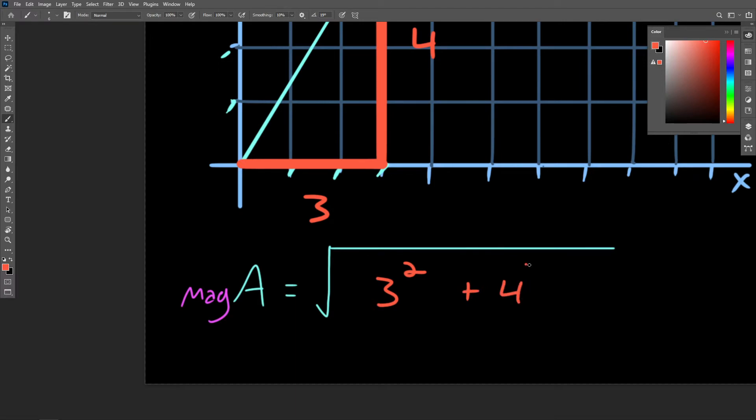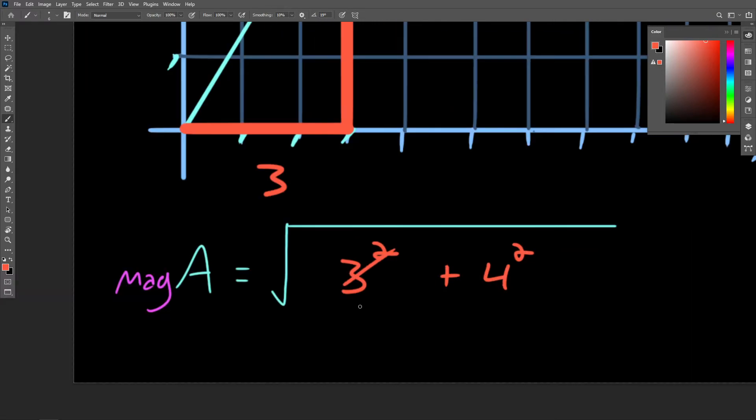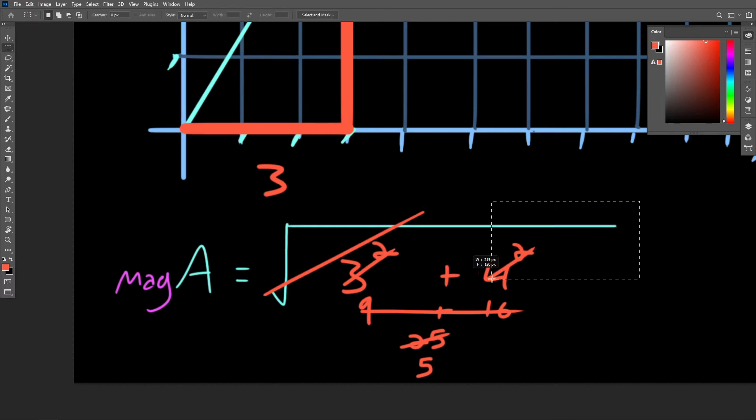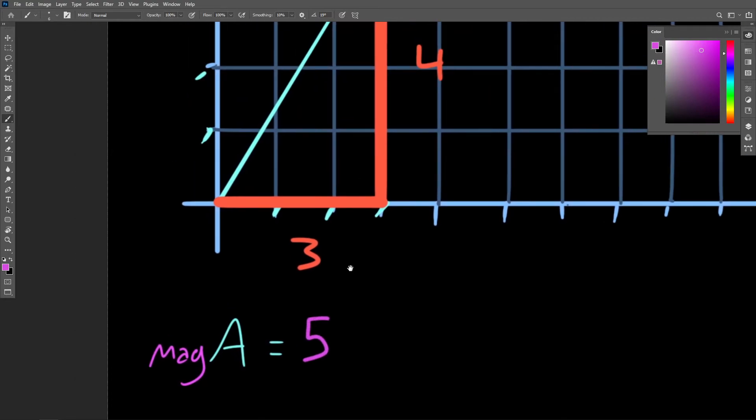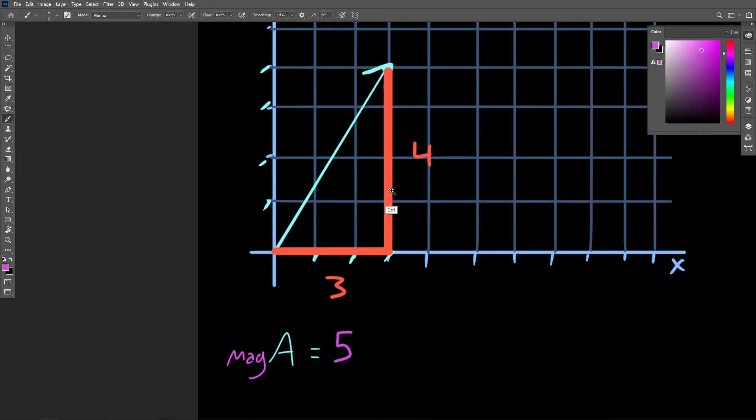And then we can just quickly solve this with 3 squared being equal to 9, 4 squared being equal to 16, 9 and 16 being equal to 25. And then we'll take the square root of 25, giving us the magnitude of vector a, which is a value of 5. And of course, we know that this is true because we're working with the 3-4-5 triangle here.